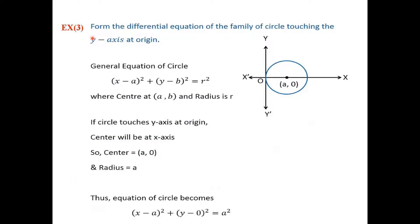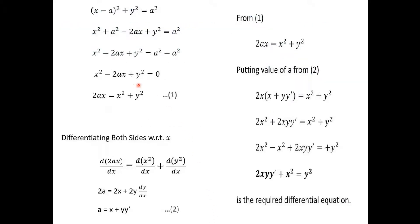Another example: form the differential equation representing the family of circles touching the y-axis at the origin. The general equation of a circle is (x−a)² + (y−b)² = r². Since the circle touches the y-axis at origin, the center has coordinates (a, 0) and radius a, reducing the equation to (x−a)² + y² = a². There is now just one arbitrary constant a, so we differentiate once and substitute back to get a differential equation free of a.